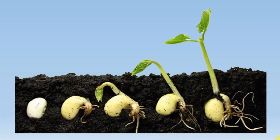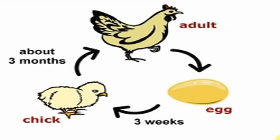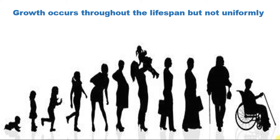Now we'll see a few more examples. When we plant a seed in the soil, the seed sprouts and then develops into a small plant, then it grows into a big tree — this is called growth. Similarly, an egg develops into a chick, then into an adult hen. In each stage there is an increase in size, and this is called growth.